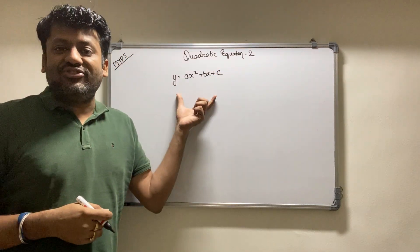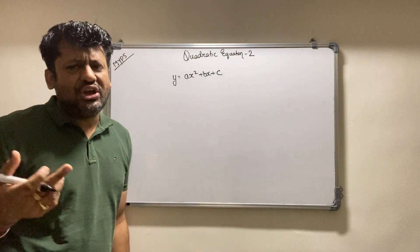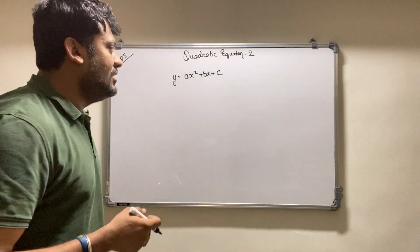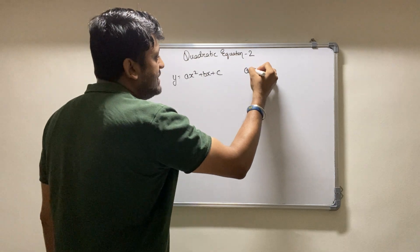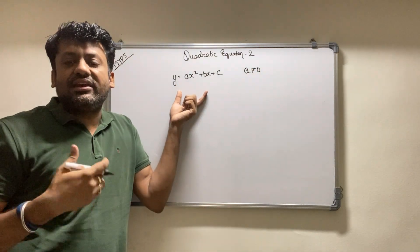So this is the quadratic equation where y can be any number: 0, 1, 2, any number. And we also said that a cannot be 0 because if a is 0 it will lose its quadratic form.